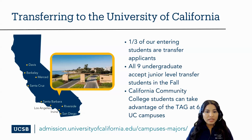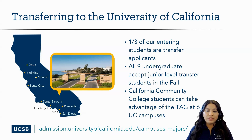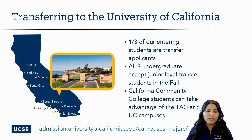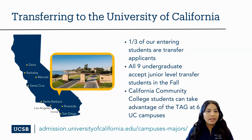One-third of our entering students each year are transfers, and most come from California Community Colleges. If you prepare ahead of time, you can even get a guaranteed space at one of our six participating campuses through the Transfer Admission Guarantee. All campuses consider transfer students at the junior level for fall admissions, who have at least 60 semester or 90 quarter units of transferable credit. It is very important to review each campus's admissions requirements for transfer students to determine if you are eligible to transfer.